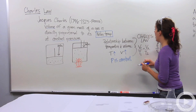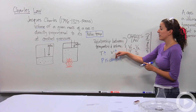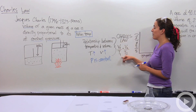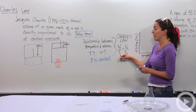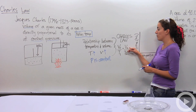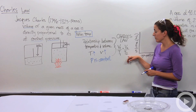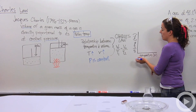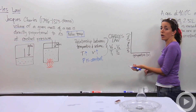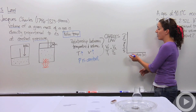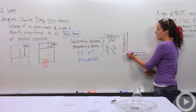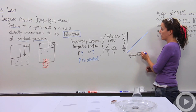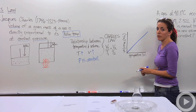Charles' Law describes a direct relationship, and we can make it mathematically equal: Volume 1 divided by Temperature 1 equals Volume 2 divided by Temperature 2. That is Charles' Law mathematically. If we were to make a graph of Charles' Law, at zero Kelvin we're going to have zero volume, because at zero Kelvin nothing moves and the volume of a gas is actually going to be zero. It increases as temperature increases, giving a linear relationship. As temperature increases, so does the volume of the gas.